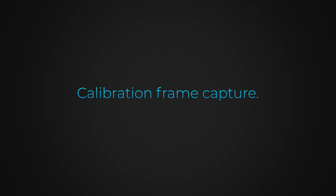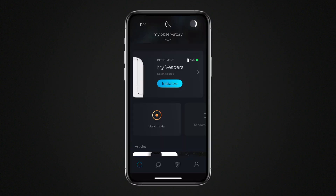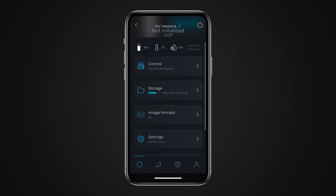Expert mode allows you to capture calibration images called darks. This is useful if you want to manually stack the raw images recorded by your telescope. Capturing calibration frames can be done at any time and does not require your telescope to be initialized. However, for optimal results, these images should be captured at a temperature similar to that of the images you will apply them to. Go to the instrument widget and select Expert Mode.